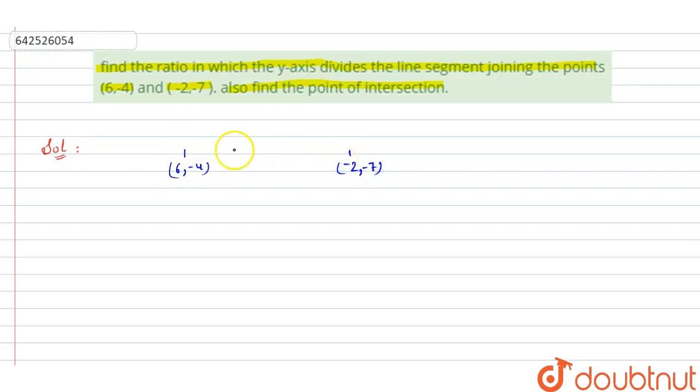These two points. Now let us assume that the line segment joining these two points is divided at the point P having the coordinate (0,y) in the ratio k is to 1.